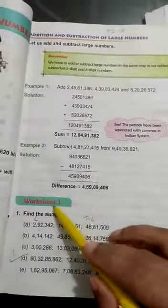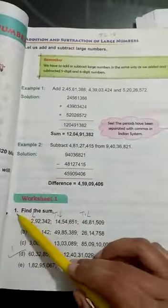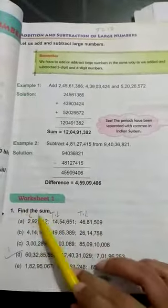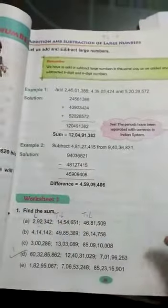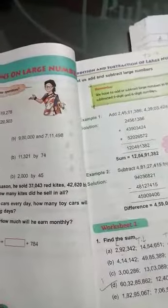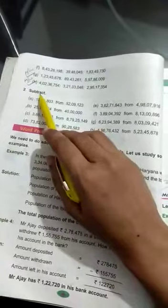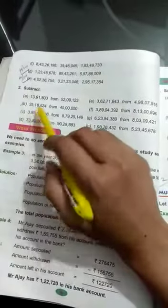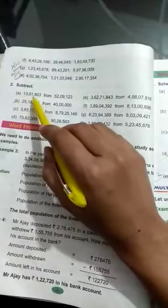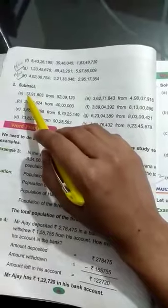Here students, we are doing worksheet 1 and we had done question number 1, that is find the sum. So now we will do question number 2 in which you will do the subtraction. In question number 2 you will do the subtraction. Questions are given to you and see how to do this question. It is very easy question.